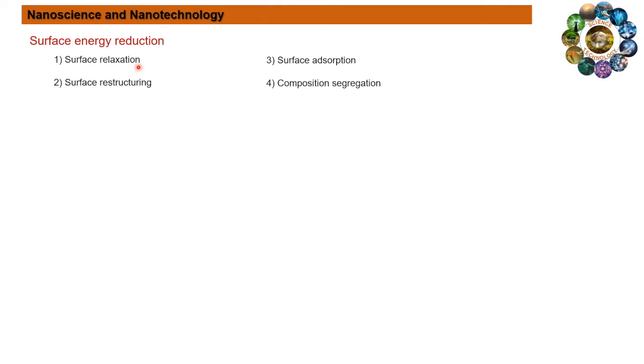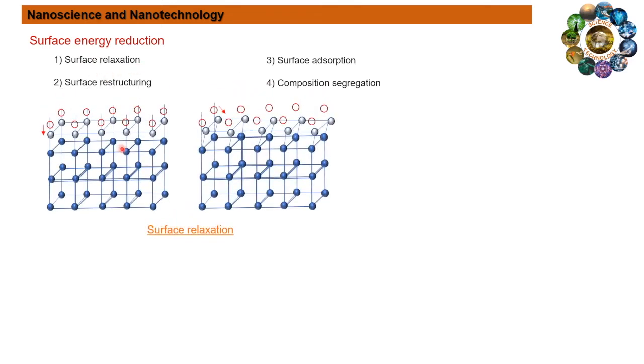In surface relaxation, the surface atoms or ions shift inwardly, which occurs more readily in liquid phase than in solid surface due to rigid structure. To understand it clearly, let us take the surface atoms on an atomic flat surface as an example.